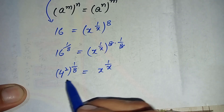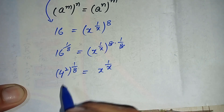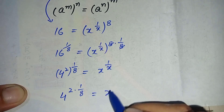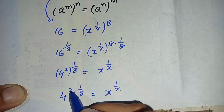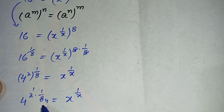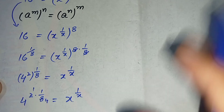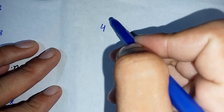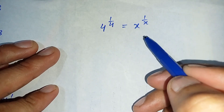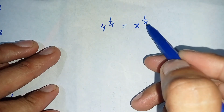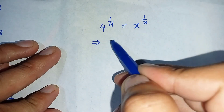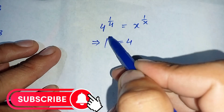Again using the exponent formula, we multiply the two powers: 4 raised to power 2 multiplied by 1 over 8 is equal to x raised to power 1 over x. Simplifying: 2 over 8 gives 1 over 4, so 4 raised to power 1 over 4 is left on the left-hand side, and x raised to power 1 over x is on the right-hand side. Since the denominators of the exponents on both sides are the same, we can compare the bases, which gives x is equal to 4.